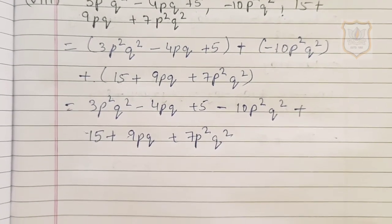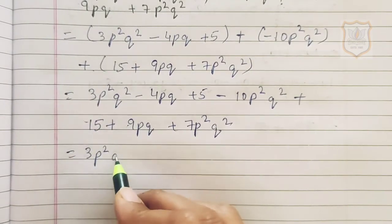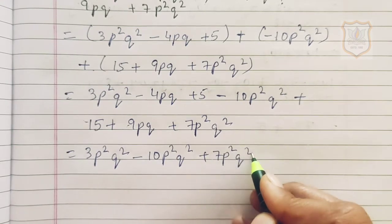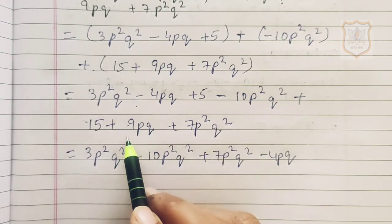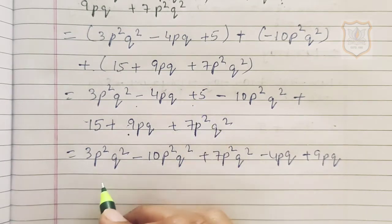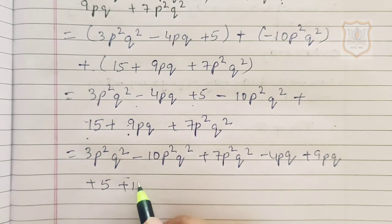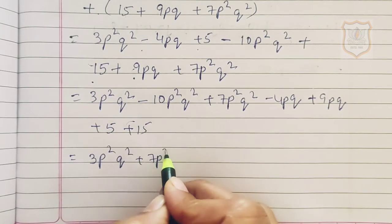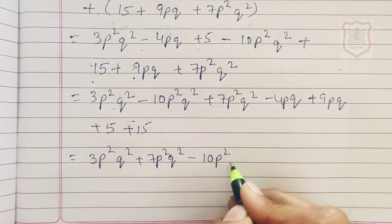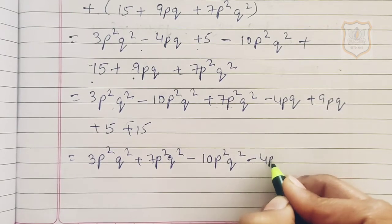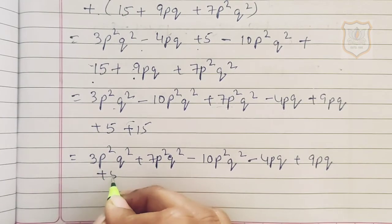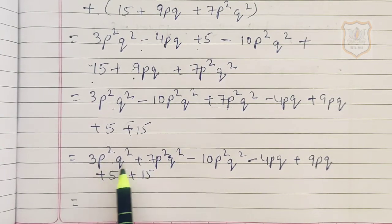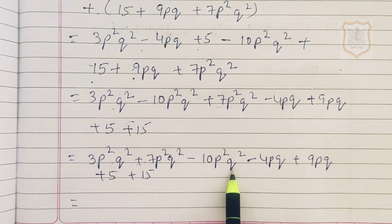Arranging like terms: 3p²q² plus 7p²q² minus 10p²q², then minus 4pq plus 9pq, then plus 5 plus 15. For the p²q² terms: 3 plus 7 is 10, and 10 minus 10p²q² gives zero, so those terms cancel completely.